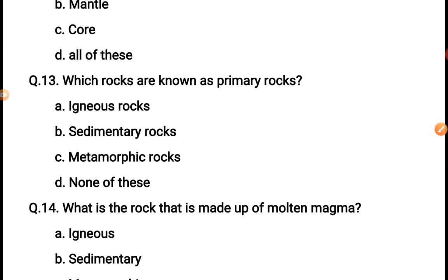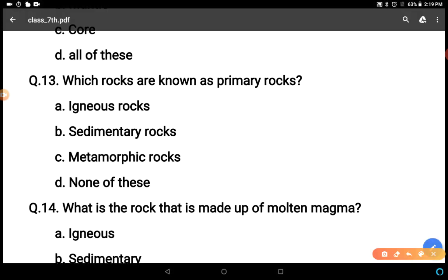Which rocks are known as primary rocks? Igneous, sedimentary, metamorphic, none of these. The correct answer is igneous. There are two types of igneous rocks - extrusive and intrusive - and these are the primary rocks because they take the solid form after the molten magma. So these are the first or primary rocks.